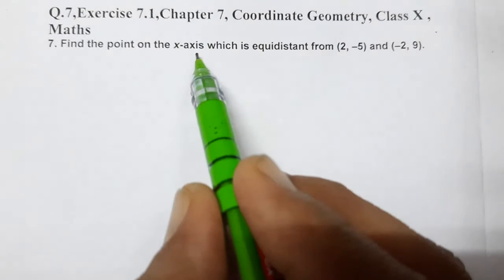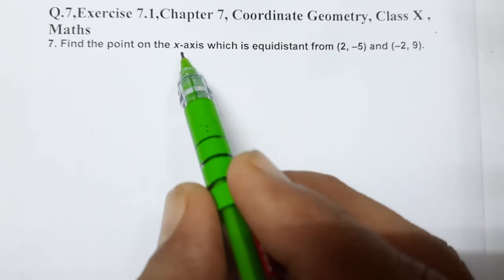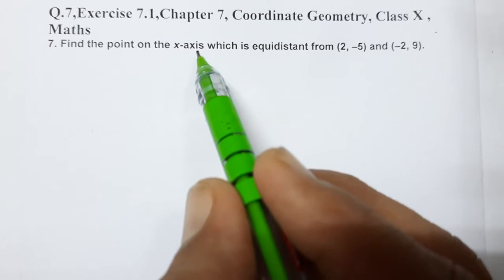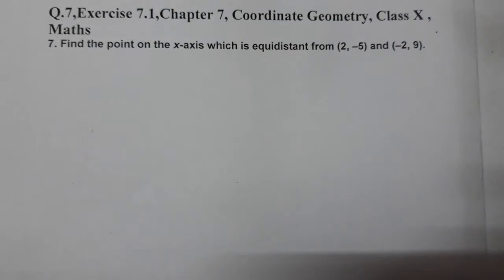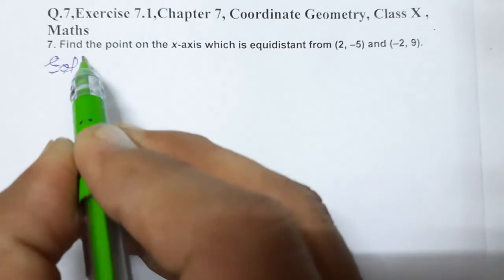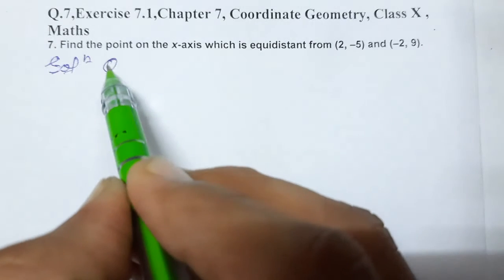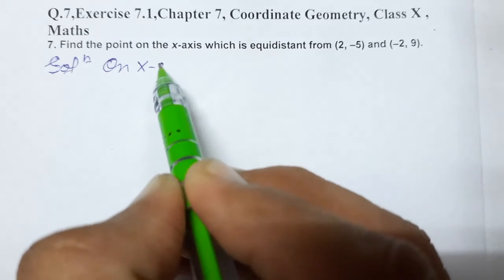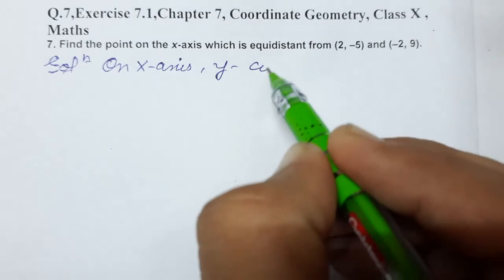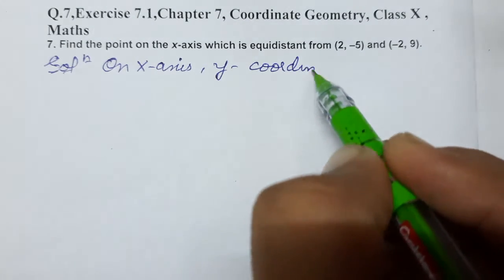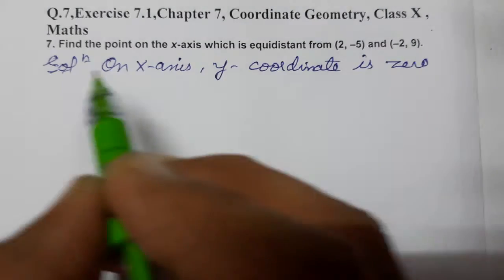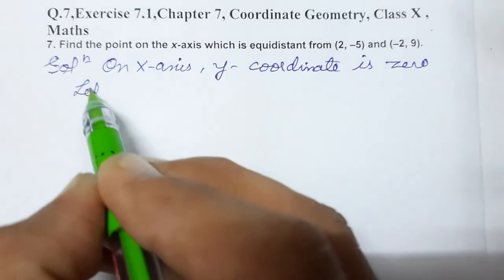We need to find a point on the x-axis. We know that on the x-axis, the y-coordinate is 0. So we write: Solution — on x-axis, y-coordinate is 0. Therefore, let the point on x-axis be (a, 0).